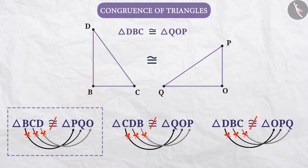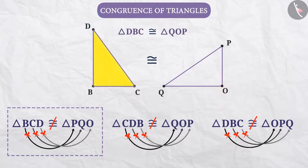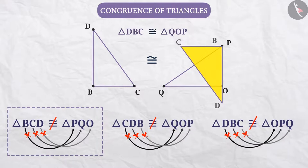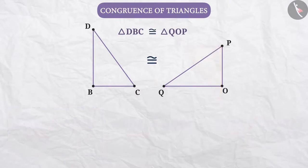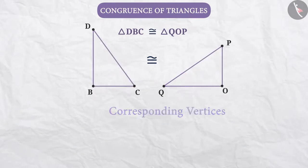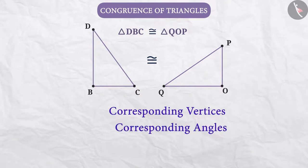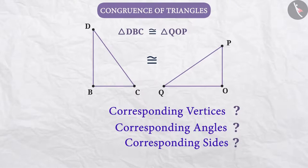That is, if we try to put vertex B on top of vertex P, vertex C on top of vertex Q, and vertex D on top of vertex O, then we know that the two triangles do not cover each other. By understanding correspondence, we can find out which corresponding vertices, corresponding angles, and corresponding sides are in congruent triangles.